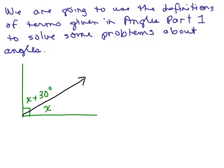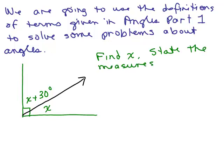Here's an example. The question is: find X, where X is an angle, and then state the two angles. You see this little box here — remember, this means that's a 90 degree angle. So these two angles add up to 90 degrees, and in fact they're complementary because two angles that add up to 90 degrees are called complementary angles.